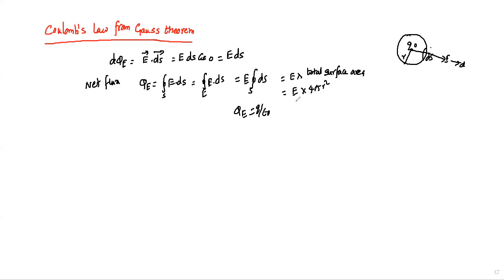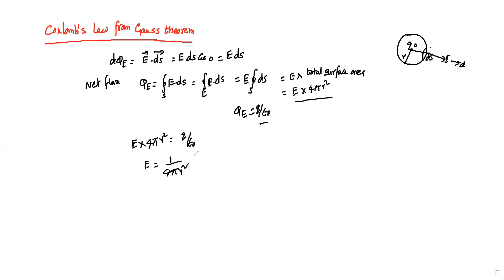Using Gauss theorem, as we know phi E is equal to q by epsilon naught. So we can equate: E into 4 pi r square equals q by epsilon naught. From that, E is equal to 1 by 4 pi epsilon naught into q by r square.